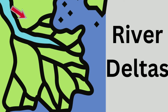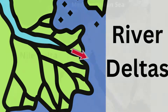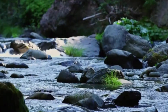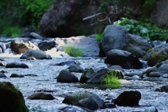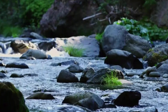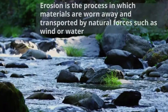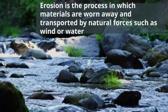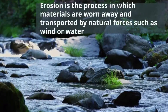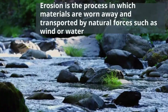River deltas form when a river carrying sediment reaches a body of water, such as a lake or an ocean. As the river flows, it picks up small particles, rocks, sand, and other items created from weathering and erosion. Erosion is the process in which materials are worn away and transported by natural forces, such as wind and water.